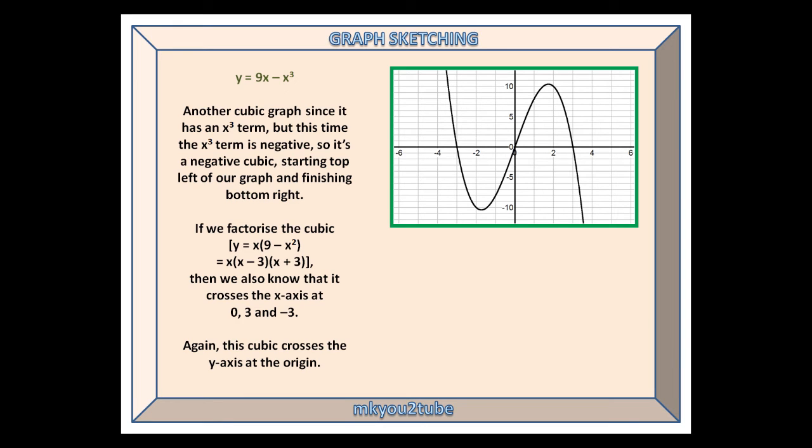If we factorise the cubic, we get y equals x times (x minus 3) times (x plus 3). Then we also know that it crosses the x-axis at 0, 3 and minus 3. Again, this cubic crosses the y-axis at the origin.